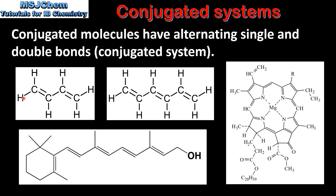Here we have examples of molecules with conjugated systems. We have 1,3-butadiene, 1,3,5-hexatriene, retinol and chlorophyll. If we look at the structures of all these molecules we can see that they have alternating single and double bonds.